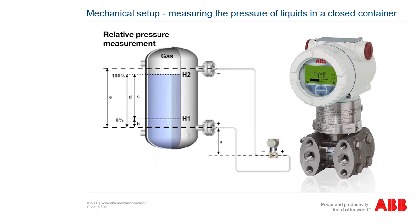To measure the level of liquids in closed containers, one sampling point must be located as low as possible on the container and the second must be above the maximum level. The transmitter must be mounted at the same height as or below the minimum level to be measured, with the cable entry pointing downward. The lower sampling point must be connected at connection plus H of the pressure transmitter and the upper sampling point at connection minus L.